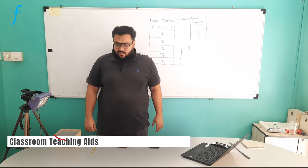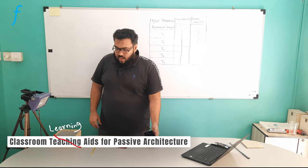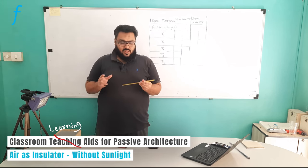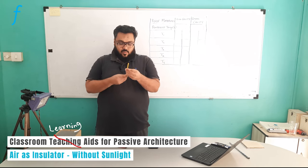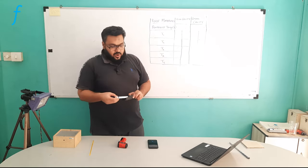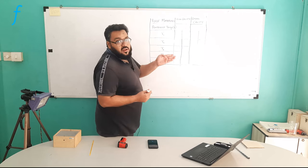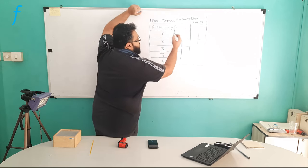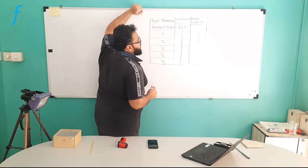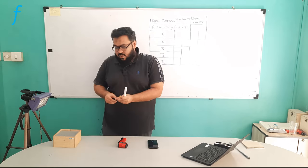To perform this experiment we have a timer set on my mobile. At the start we will note down the ambient temperature of this room where we are performing the experiment — it is showing a reading of 23.5 degrees Celsius. I have a table prepared to note down the observations. I will note down the ambient temperature reading of 23.5 degrees.